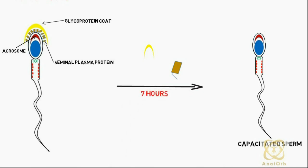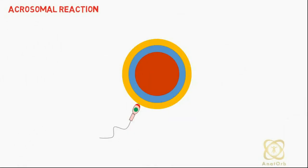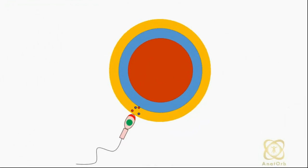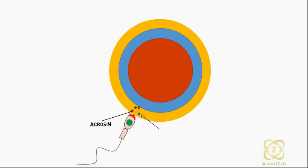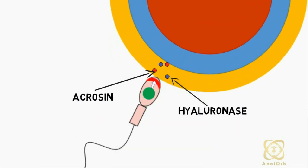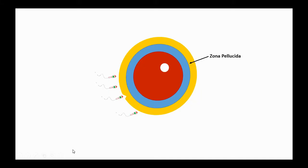Acrosome reaction occurs after the sperm binds to the zona pellucida. It involves the release of acrosin and hyaluronase enzymes from the acrosome. This process leads to the penetration of the zona pellucida by the sperm. Penetration by the sperm leads to a change in the properties of the zona pellucida, making it impermeable to other sperms. This process is called zona reaction.